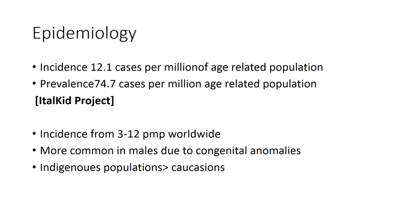We don't know much about the epidemiology of chronic kidney disease because it ranges from mild to very severe, and only the more severe forms come to medical attention. Some places have done population-based studies, such as the Italian Kidney Project, where they found an incidence of about 12 and a prevalence of 74 cases per million of age-related population. A review article found that the estimated incidence of CKD among children ranges from 3 to 12 per million of age-related population.